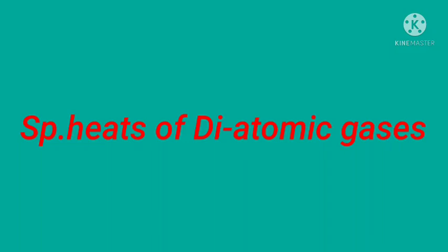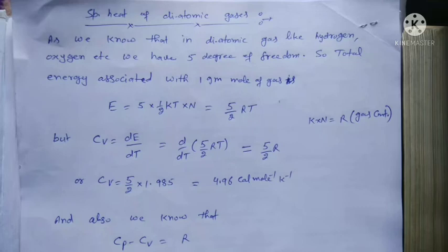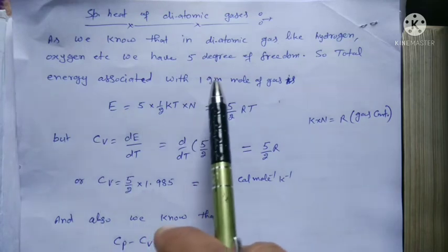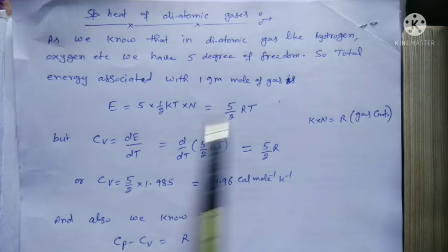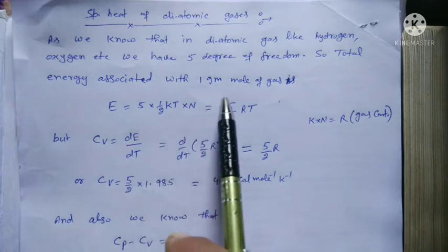Good morning students. Now we discuss about the specific heat of diatomic gases as well as gamma, the ratio of two specific heats of gas. Now we take up the specific heat of diatomic gas. As we know that in diatomic gas like hydrogen, oxygen, we have five degrees of freedom.